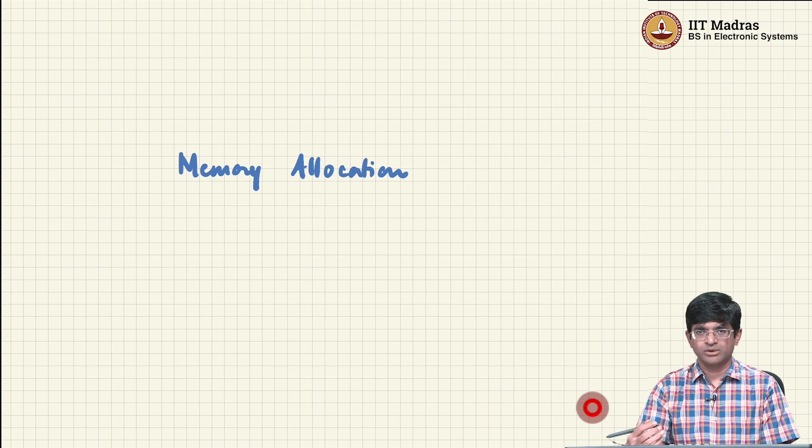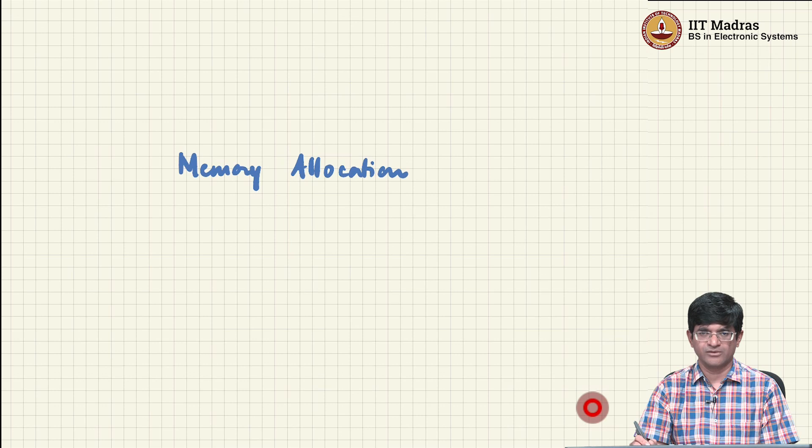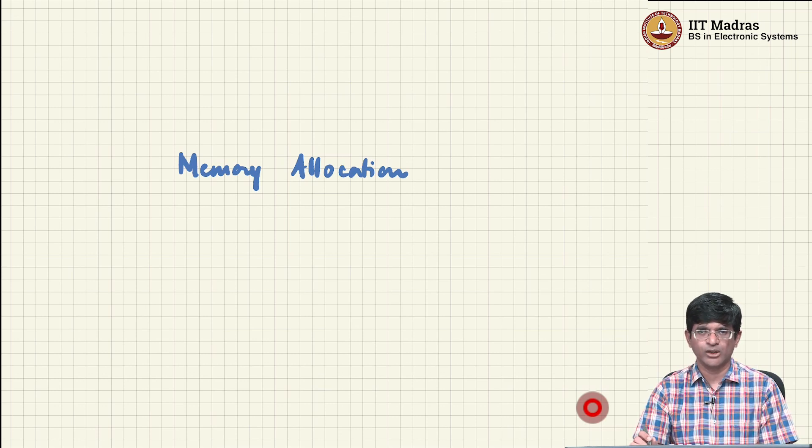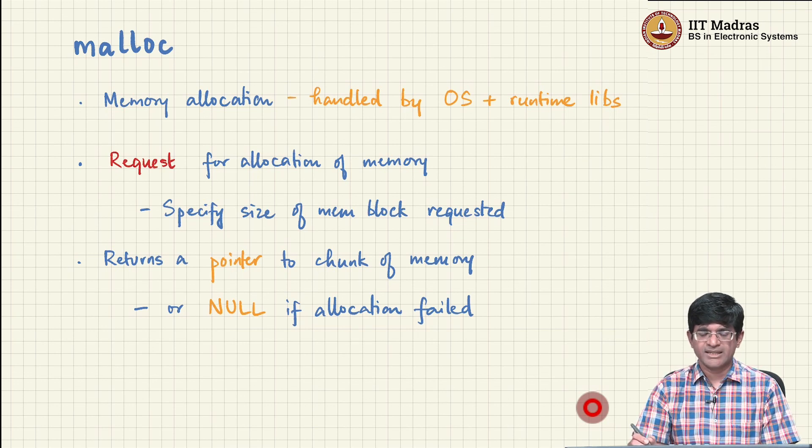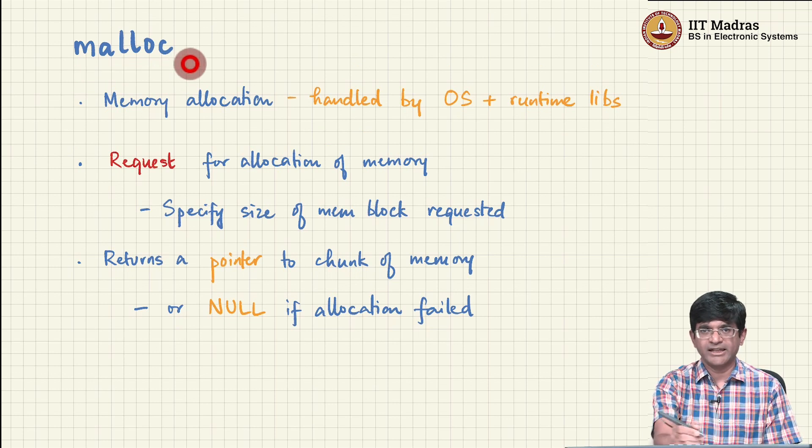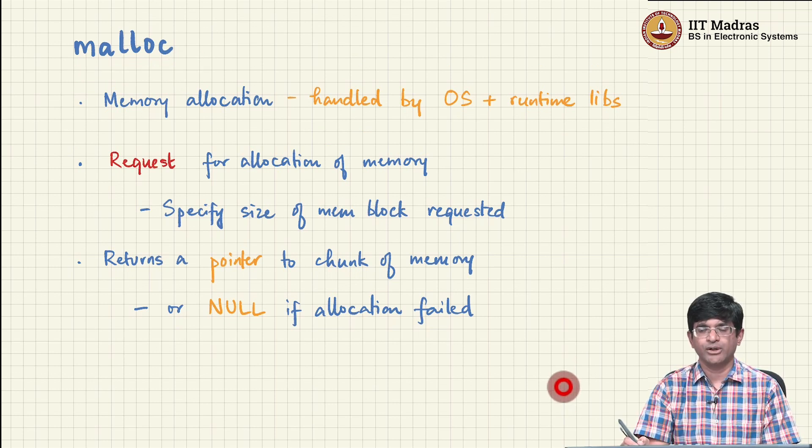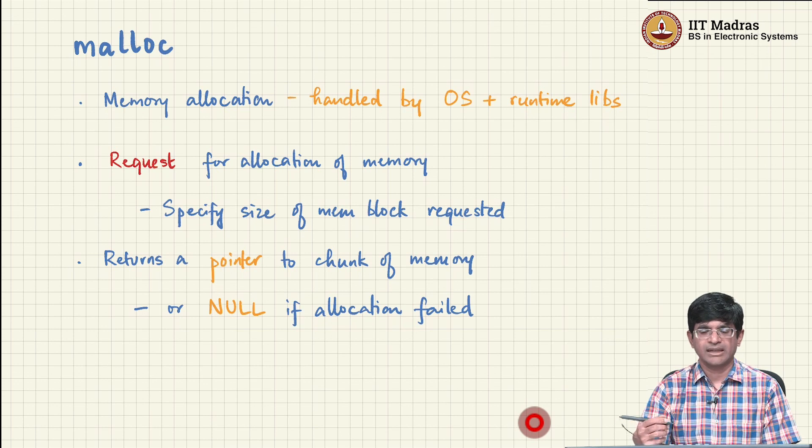Now, before we get into the details of how to use the memory allocation functions, it is probably a good idea to understand how memory allocation works in the first place, or at least get a high level understanding of what is happening. The main thing that we are interested in is a function called malloc. Just like printf, malloc is another function that is provided to you as part of the C standard libraries.